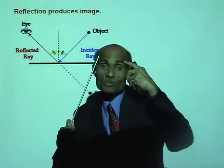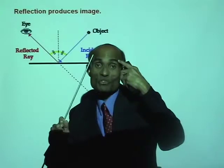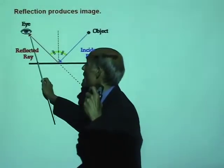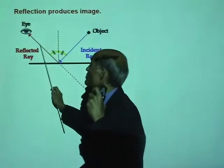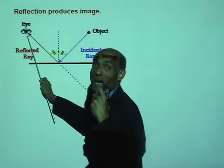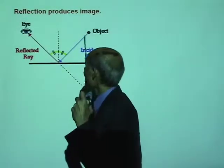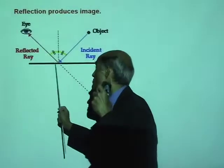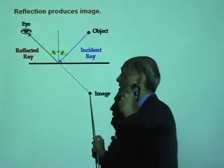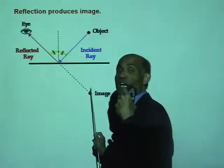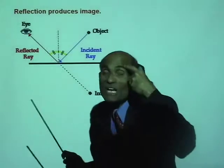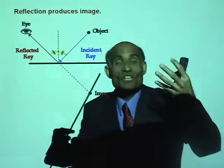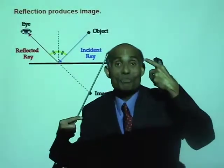Your brain tells you that light travels in a straight line, meaning this ray that reaches your eye must be coming straight from somewhere. The image that you see in the mirror is an illusion created by your brain.